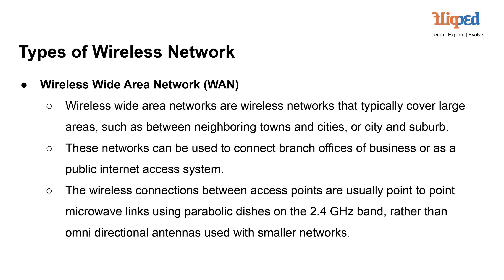Wireless Wide Area Network (WAN): A wireless wide area network (WAN) is a type of wireless network that covers large geographical areas, such as the distance between neighboring towns, cities, or even from a city to its suburbs. These networks are designed to provide connectivity over significant distances, enabling communication between remote locations that are far apart.